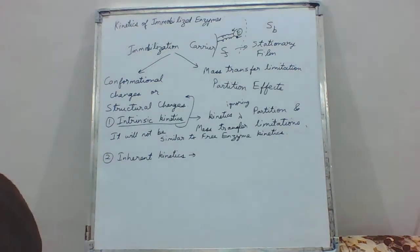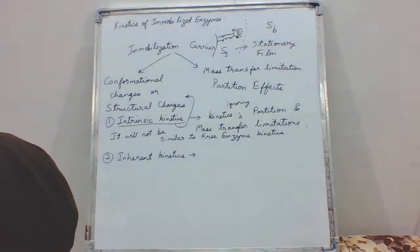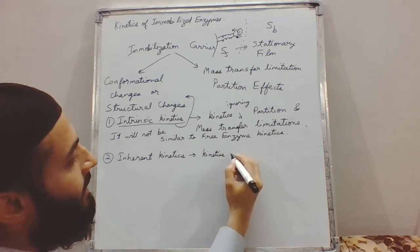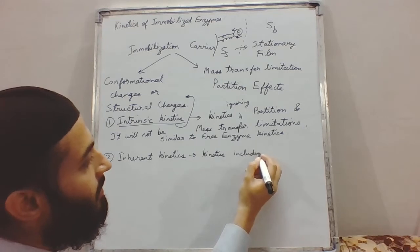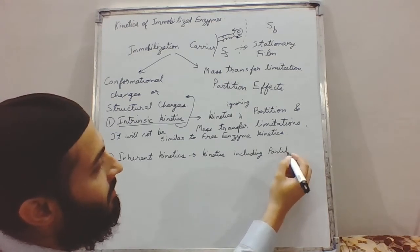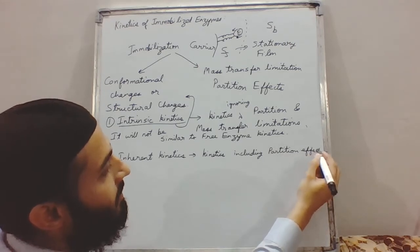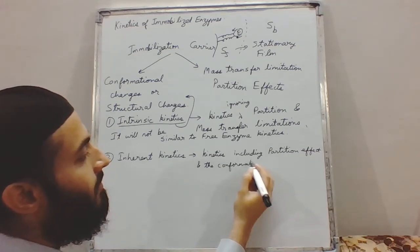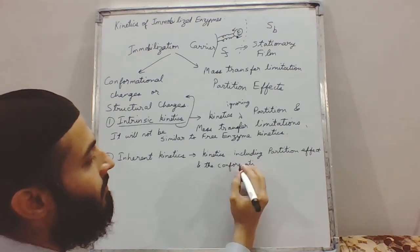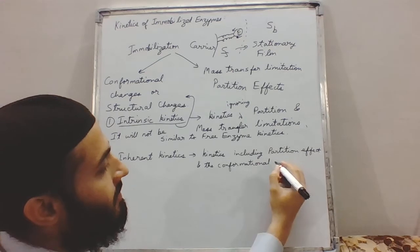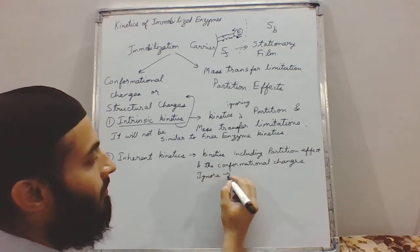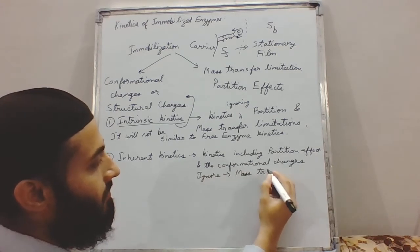The second type of kinetics is inherent kinetics. Inherent kinetics is the kinetics observed in the absence of mass transfer limitations only — it includes the effects of conformational changes but ignores mass transfer resistance.